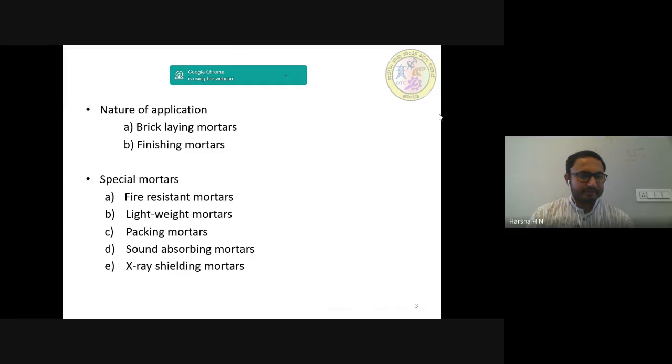Next type is sound absorbing mortars. To reduce the noise level, the sound absorbing plaster is formed with the help of sound absorbing mortars. The bulk density of such a mortar varies from 6 to 12 kilonewton per meter cube. The binding materials employed in this composition may be Portland cement, lime, gypsum, slag, etc. The aggregates are selected from lightweight porous material such as pumice, cinders, etc.